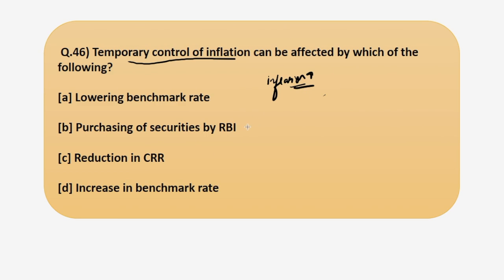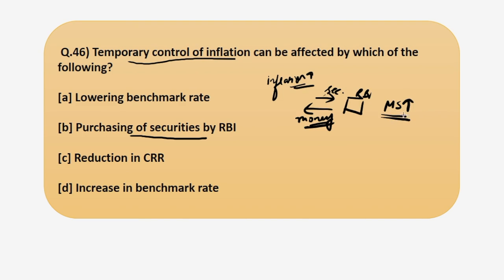Firstly, we shall be discussing the purchasing of securities by RBI. Imagine RBI is the central bank and if it purchases the securities from the market, then securities will come to RBI and in return, it has to give money into the economy. So this action of RBI will increase the money supply in the economy, boosting inflation. So this option is not the correct one.